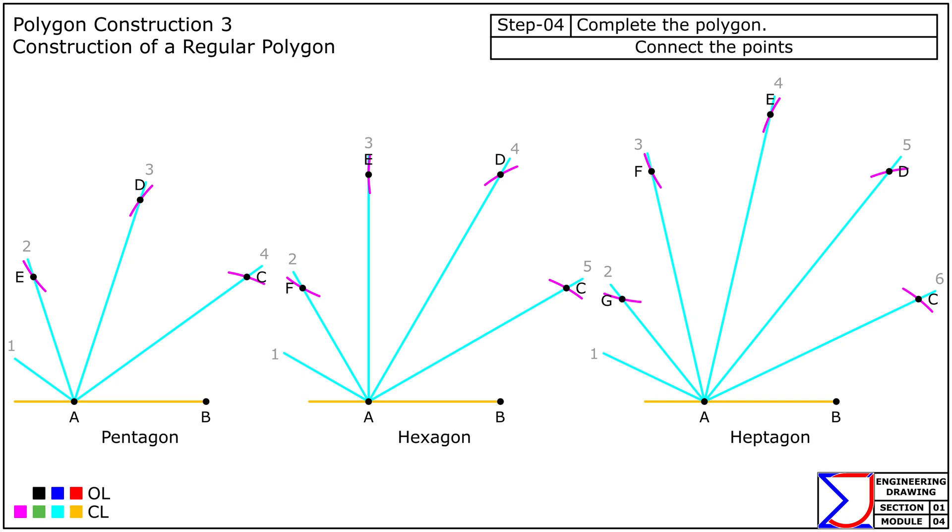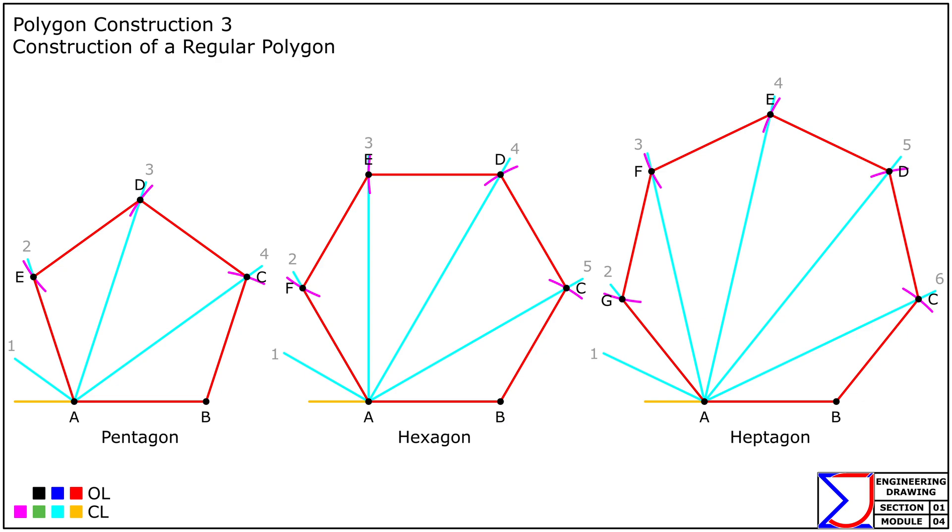Finally, connect the points B, C, D, and so on to complete the required polygon. This method provides a simple and accurate way to construct a regular polygon of any given side length. By dividing the angle into equal divisions and successively marking the points, it ensures consistent side lengths and precise construction, making it reliable for geometric tasks. That's all for this module.